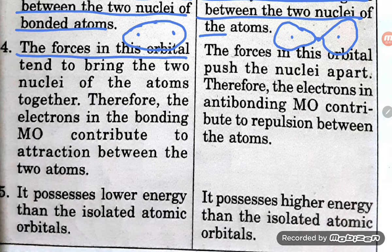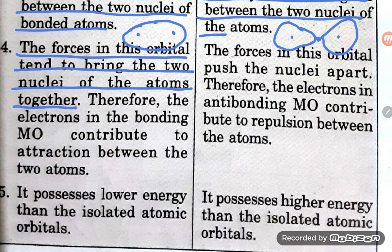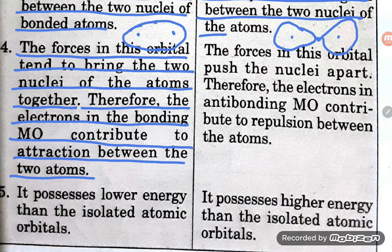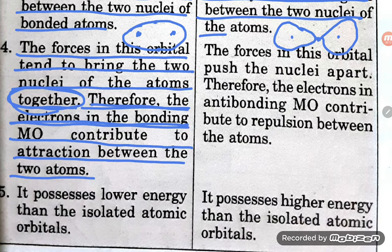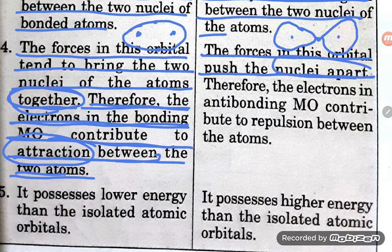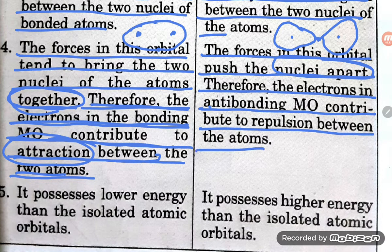The fourth point: the forces in the bonding orbital tend to bring the two nuclei of the atoms together. Therefore, the electrons in the bonding molecular orbital contribute to attraction between the two atoms. For the antibonding molecular orbital, the forces in this orbital push the nuclei apart. Therefore, the electrons in the antibonding molecular orbital contribute to repulsion between the atoms.